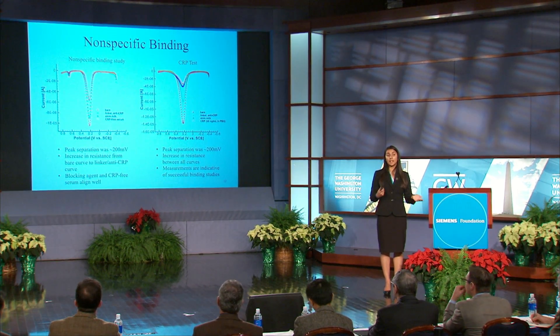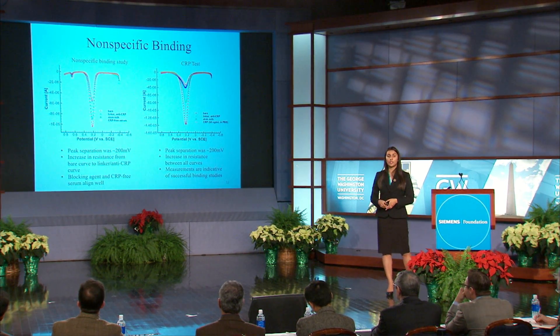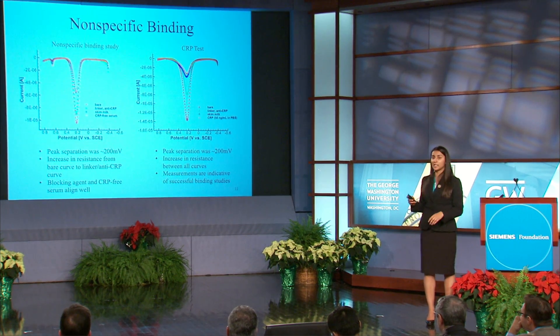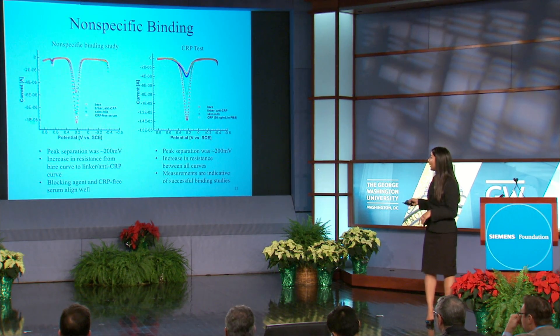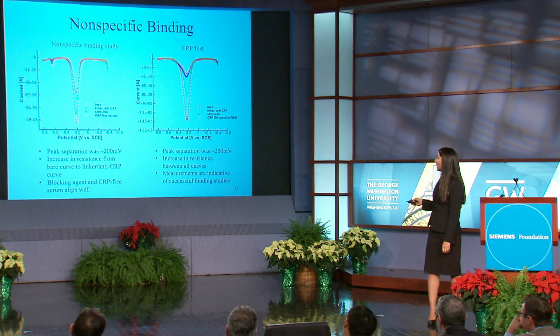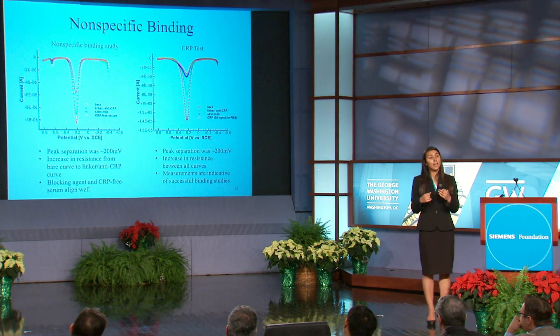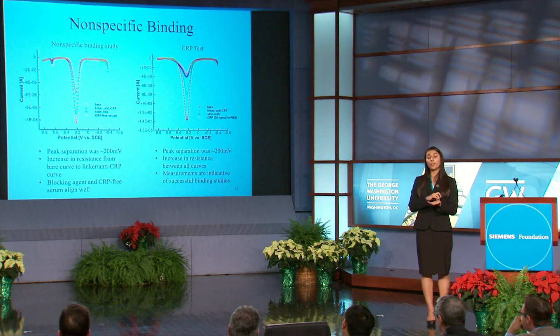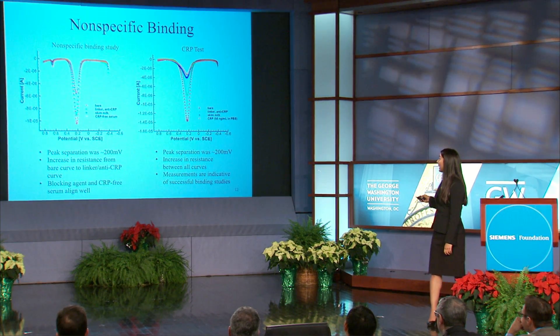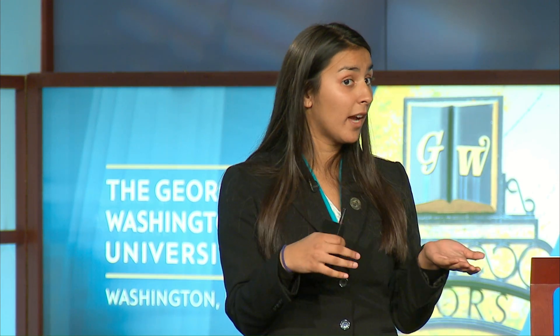This slide shows the nonspecific binding data. The peak separation is about 200 millivolts, which is considered ideal. There is an increase in resistance in each step of the surface characterization process — from bare, to linker and antibody, to blocking agent skim milk, and finally the CRP-free serum — but there is no change in resistance in the last two steps. This proves that none of the extra proteins in the CRP-free serum bound to my CRP-specific antibody. The second graph shows a change in resistance between the last two steps, proving the blocking agent effectively blocked all undesired active binding sites, leaving the antibody site open for specific analyte detection.